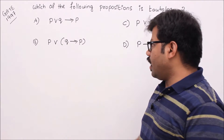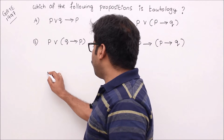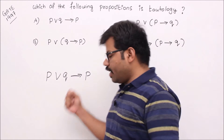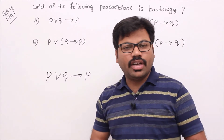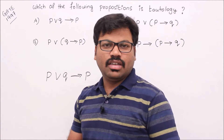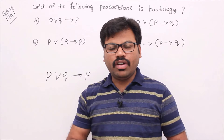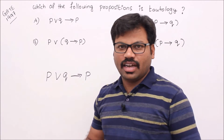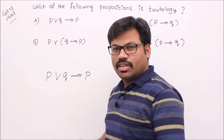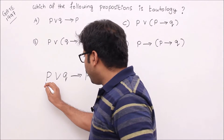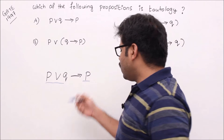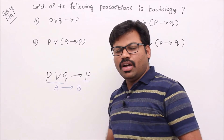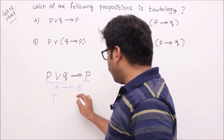Let me start with option A: p∧q implies p. Our target is checking whether it is a tautology or not. If it is a tautology, we get always true assignments. If it is not a tautology, we can find at least one false assignment. My target is making this formula false at least once. The structure is 'a implies b' — we can make it false only when a is true and b is false.